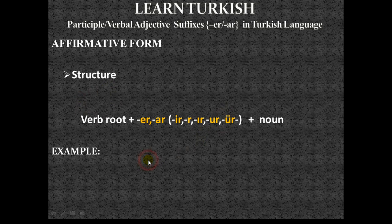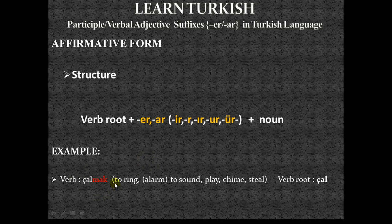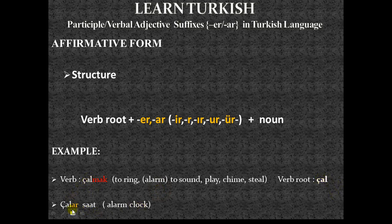Our example verb is 'çalmak,' which means to ring, alarm, to sound, play, or chime. Çalmak has more than one meaning in English — it can mean ring, alarm, to sound, or steal. Our verb root is 'çal,' and we use the meaning 'alarm, to sound' here. We produce from the verb root 'çal' the verbal adjective 'çalar' by using the -ar suffix. The noun here is 'saat' (clock), giving us 'çalar saat,' which translates as alarm clock.